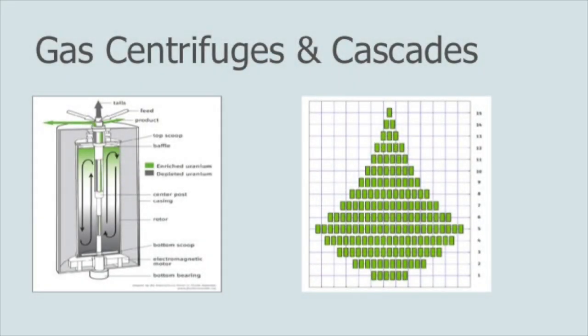So here's a picture, a schematic of a gas centrifuge and a gas centrifuge cascade. The picture on the left shows you how a centrifuge operates. You see the white arrows at the top show a feed material coming in. That feed is going to be uranium hexafluoride, and uranium hexafluoride, if you're feeding natural uranium for example, would have seven tenths of one percent uranium-235.